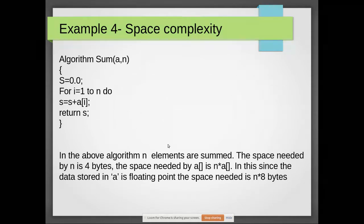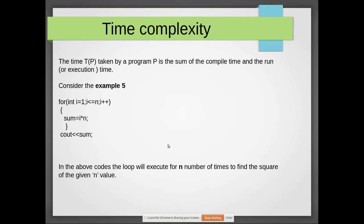Now another one: time complexity. So far what we have seen is space complexity. Now we will see time complexity and how to calculate it. Time taken is the sum of compile time and execution time. Now we will see the time needed for this code.